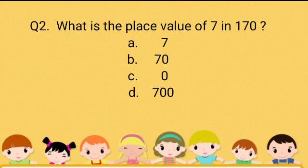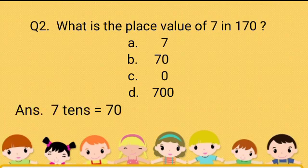Question 2: What is the place value of 7 in 170? Option A: 7. Option B: 70. Option C: 0. Option D: 700. The answer is 7 tens, that is equal to 70.